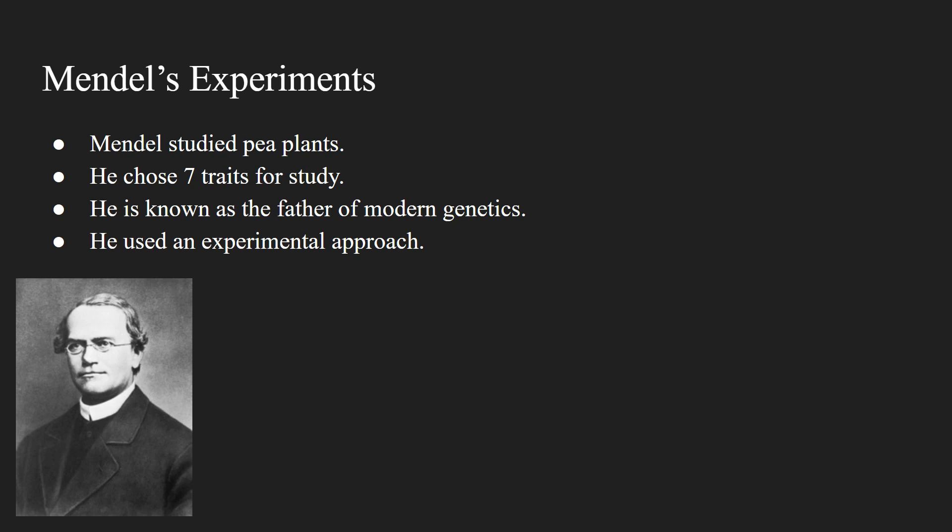Mendel chose seven traits for study and 34 varieties of peas, and Mendel's study was effective for several reasons. First of all, his plant was easy to cultivate and grew relatively quickly. Secondly, the plants were pure in genetic makeup and easy to obtain. Mendel was also successful because of the seven traits he chose for study. Finally, he adopted an experimental approach and used math to interpret his results.